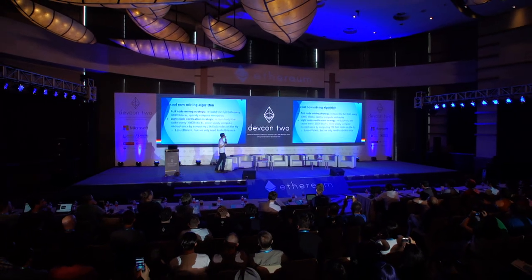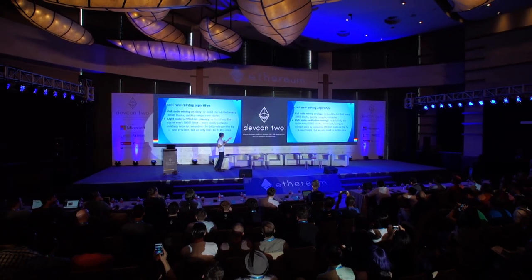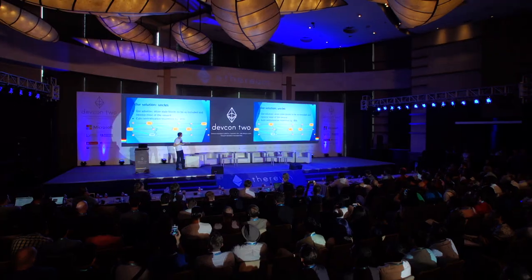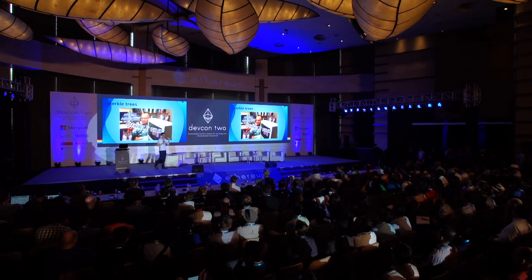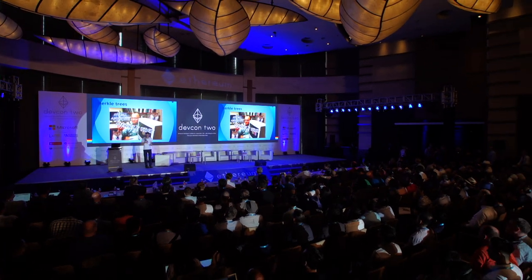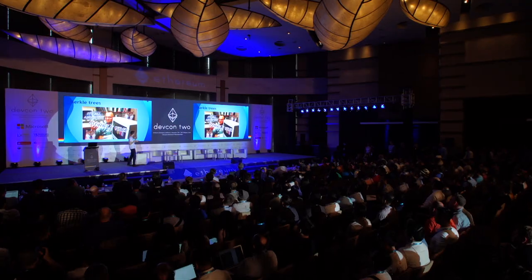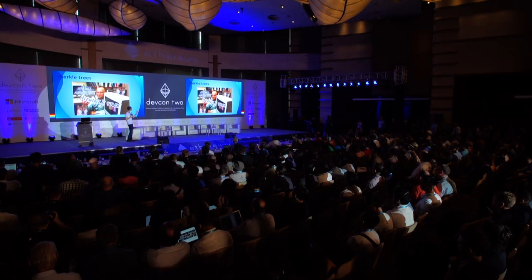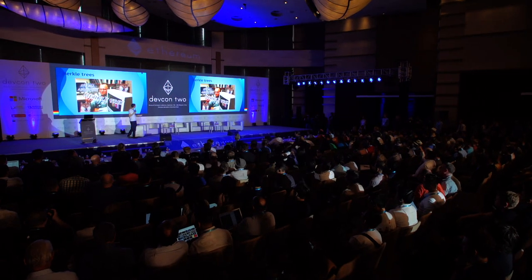Merkle trees — this is a very important piece of the Ethereum protocol. There was a New York Times cover about a year ago saying it's all about the blockchain, but personally I think it's not just about the blockchain, it's about the Merkle tree. Merkle trees are awesome and really important.